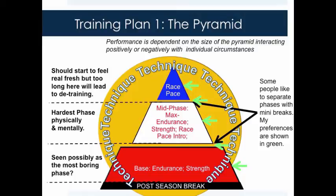The base of our pyramid is seen possibly as the most boring phase for the slalom paddler. The very bottom of that base starts off with a post-season break — it is very important that the athlete comes back to training feeling fresh and motivated. The base typically includes a number of components of endurance, strength and strength endurance. Many people like to separate the stages of the pyramid with breaks, but I prefer mini breaks throughout each period of training. Most athletes I've worked with can deal with three-week periods, though others from different sports cope with six weeks before they require a recovery period — this is individual preference.